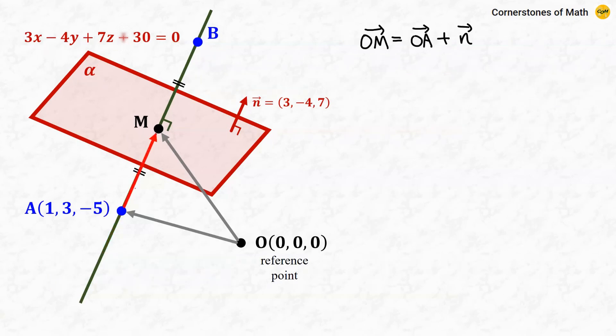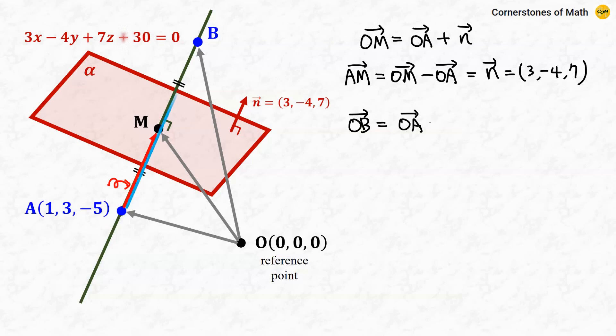Therefore, this vector AM is given as vector OM minus vector OA, so it is just vector N, which is (3, -4, 7). Therefore, the position vector OB is given as vector OA plus vector AB. And this vector AB is twice the vector AM.